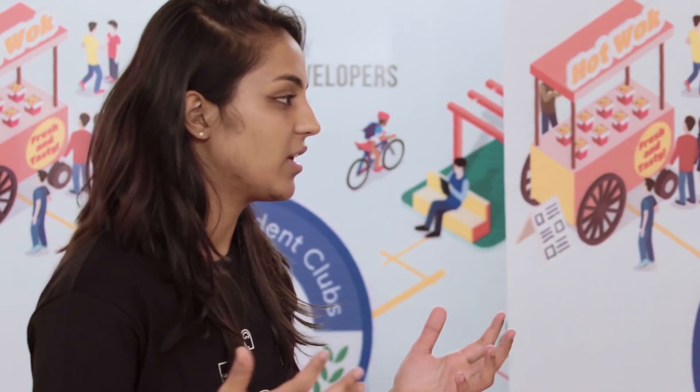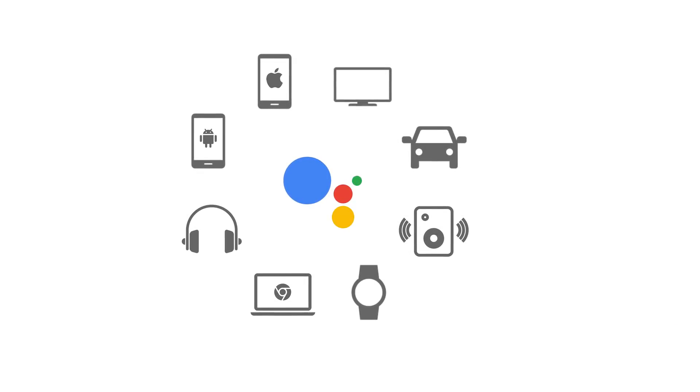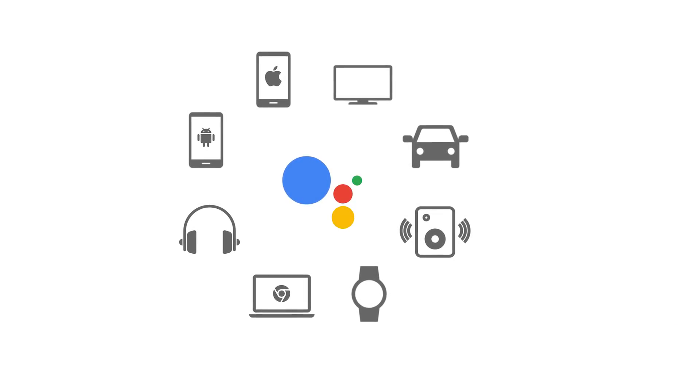Taking a step back, if you see the evolution of technology — when phones first came in, you had to press so many buttons to get anything done. Then we moved on to the era of touch screens, where you could just press buttons and use gestures to interact. Now we are moving to the era of voice, and one of the great things about Assistant is that it's everywhere — it's in your mobile, your watches, your cars, and speakers.